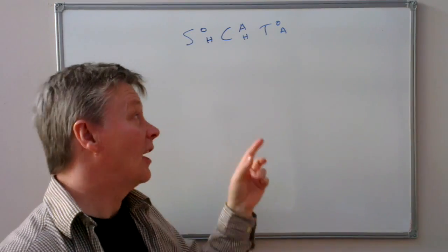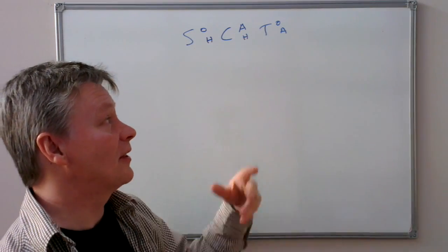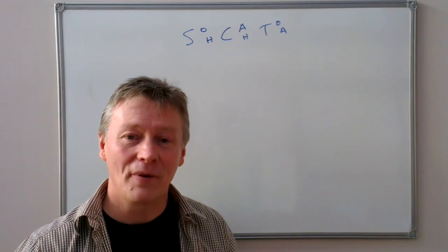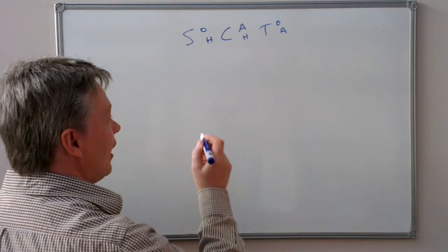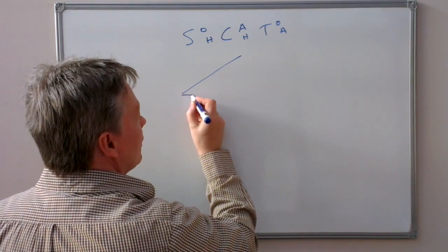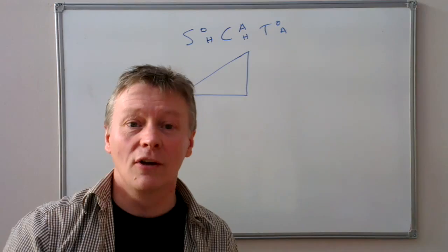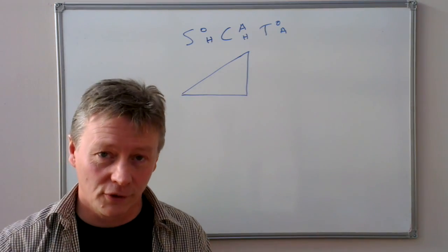What I mean by that is, let's say we have a right angle triangle. This particular relationship will only work with right angle triangles. There are slightly different variations of this for dealing with other different types of triangles.